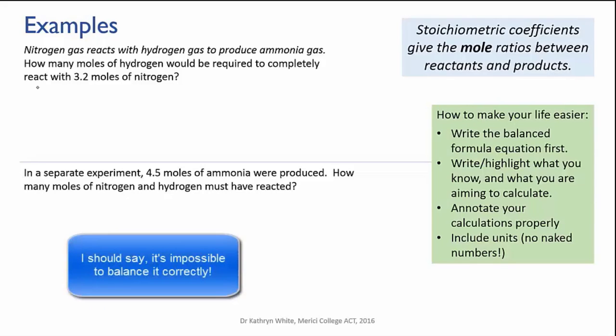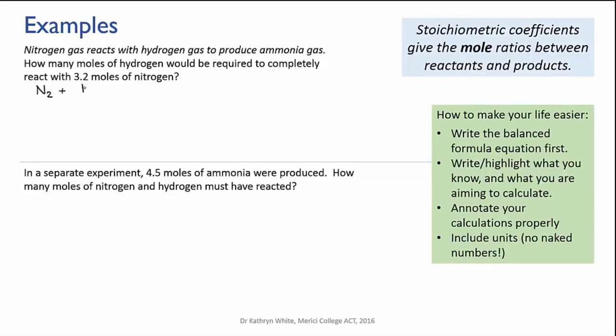So here we have nitrogen and hydrogen, both diatomic, giving ammonia, NH3, and we can balance it like this.